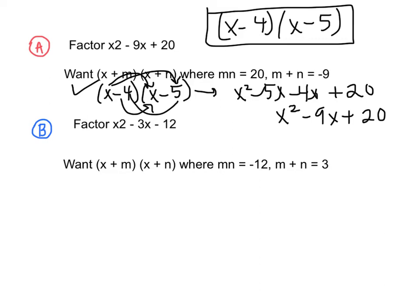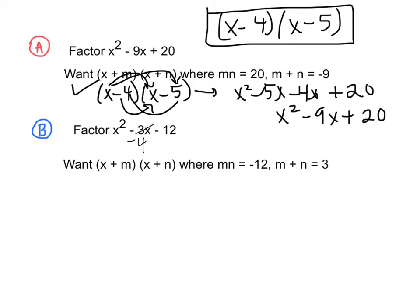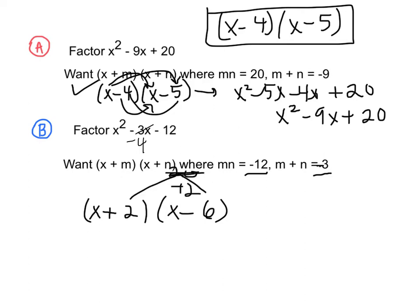Our second problem is to factor x squared minus 4x minus 12 — noting that the middle term should be negative 4, not negative 3. We want to find two numbers that when multiplied together equal negative 12 and when added together equal negative 4. Using x plus 2 and x minus 6, we can verify by expanding to get x squared minus 4x minus 12.